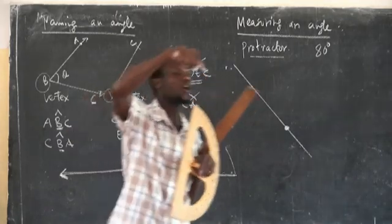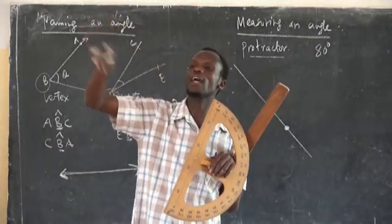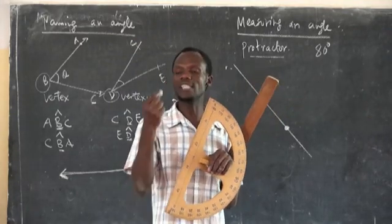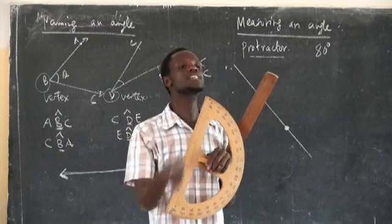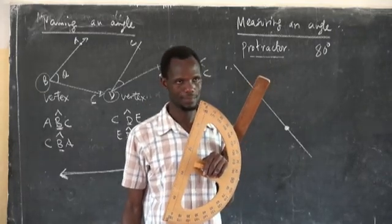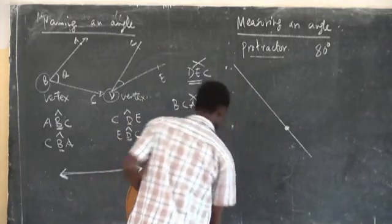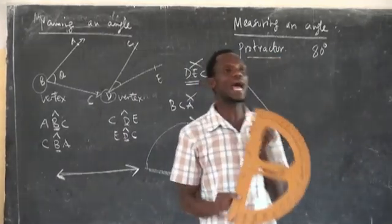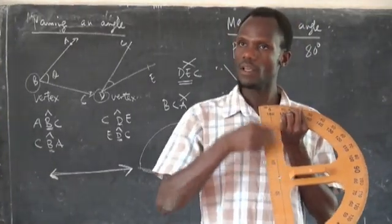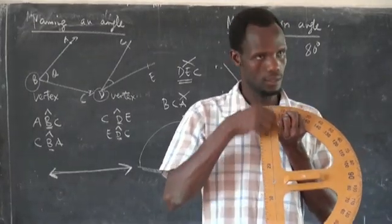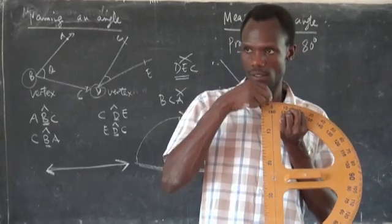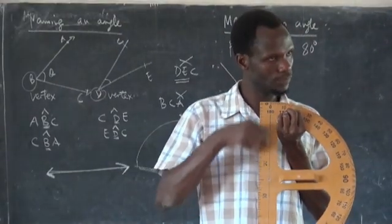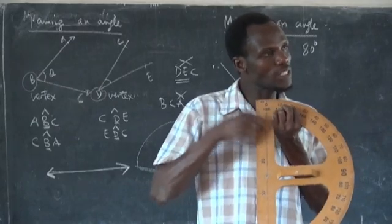Simply because an angle is formed at the intersection of two lines. So at the intersection point, we call it the vertex. The intersection point is the vertex. After that, make sure this line — make sure that these lines go together — you put this line on the line that you have drawn. Don't put it out of the line that you are drawing.